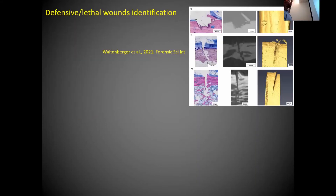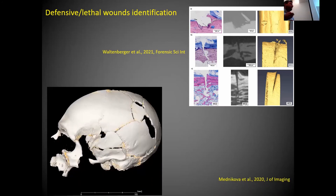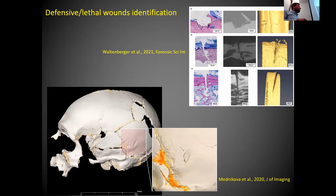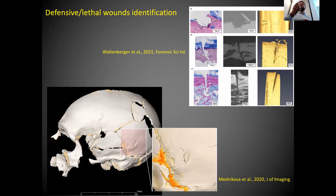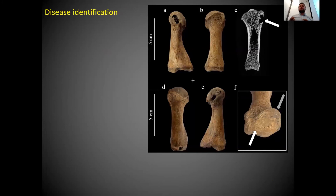You can also quantify defensive or lethal wounds — for example, cuts on bone can be visualized and analyzed for depth and shape. For skull fragments, you can scan each fragment individually and visualize wounds present in the skull.